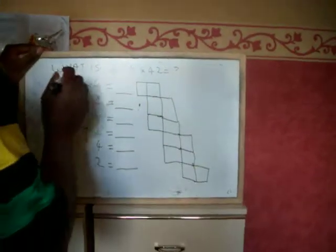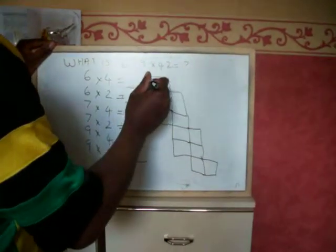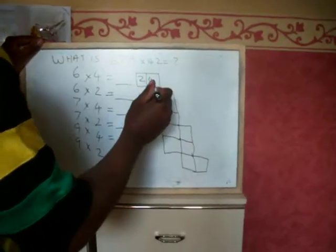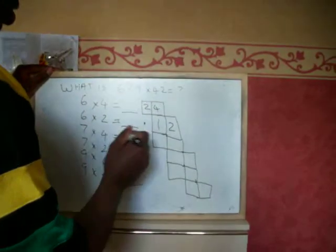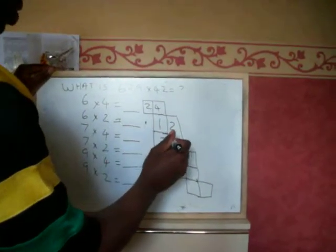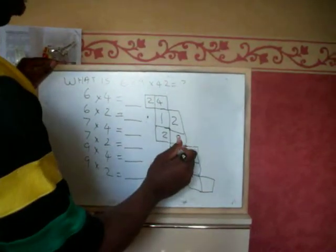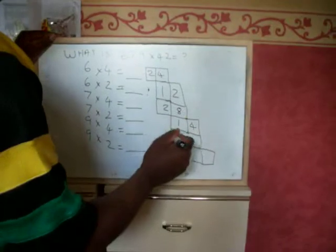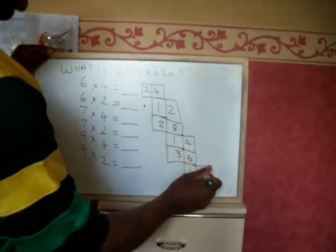Right, let's multiply: 6 times 4 is 24, 6 times 2 is 12, 7 times 4 is 28, 7 times 2 is 14, 9 times 4 is 36, 9 times 2 is 18.